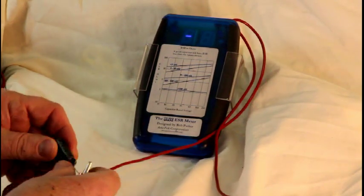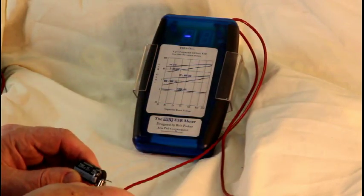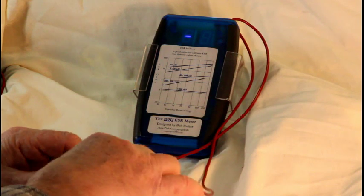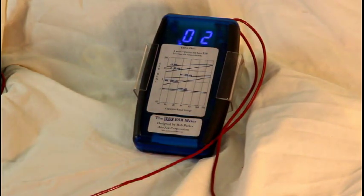Let's check another one. This one is 2200 microfarads at 35 volts. And that's reading 0.02, 20 milliohms.